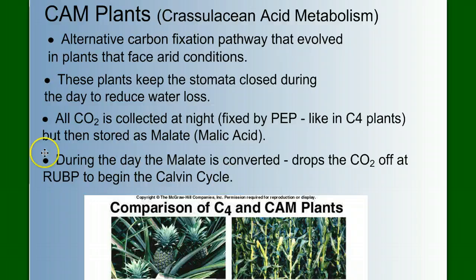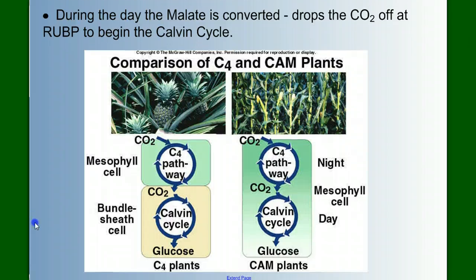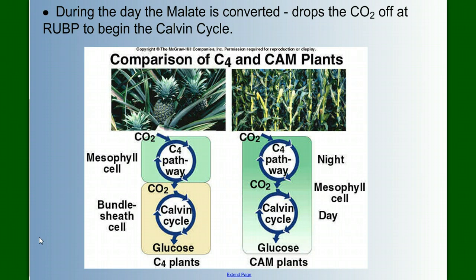So they do photosynthesis in two stages. And here we can see a comparison of C4 and CAM plants. Notice the CAM plants do not involve two different cells. They don't rely on this unique anatomy. They rely on a unique metabolic pathway. They just have different enzymes involved in this process, but it's similar.